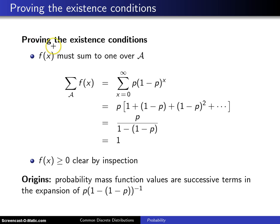So we're going to prove these two existence conditions for the geometric distribution. The first is f of x must sum to 1 over its support, and that's written in general for any discrete distribution in this fashion. The sum over the support script A of f of x is equal to...